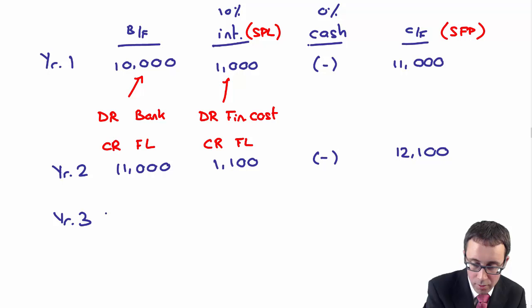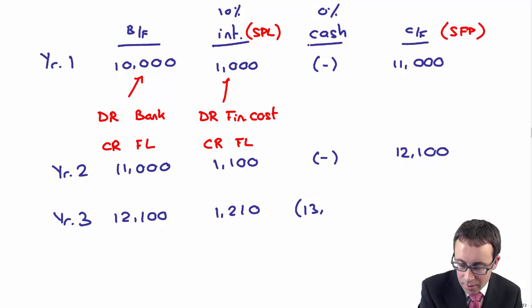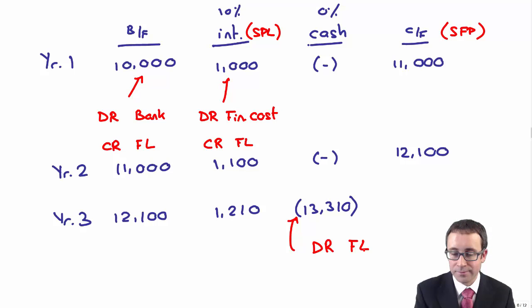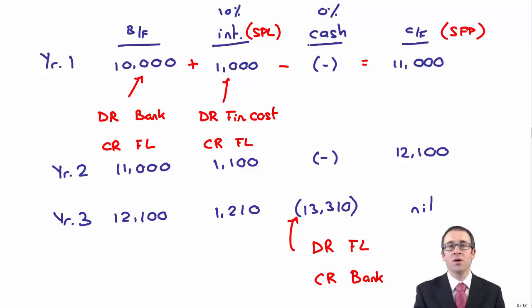Year three, I've got my $12,100 opening liability. The interest is $1,210. Be careful because at the end of year three, that's when we pay the cash back - that's when this liability is redeemed. Here we debit the financial liability because we have paid it and it has been extinguished, and we credit the bank for $13,310. That should bring you down to nil. Initially you recognise it at net proceeds - there were no transaction costs. You then treat it subsequently at amortised cost. You increase the value of the liability using the effective rate of interest. We deduct any contractual cash flows that you have to pay to give you the figure on the statement of financial position.